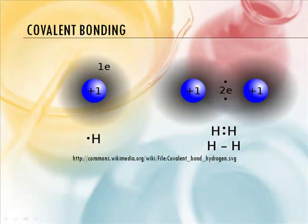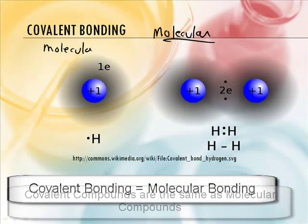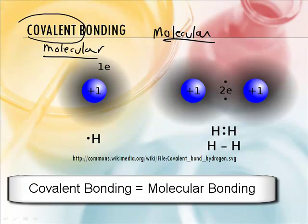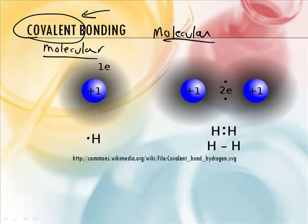Now we've got a different kind of bonding: covalent bonding. This is sometimes called molecular bonding, and it forms covalent compounds, which are also sometimes called molecular compounds — just two different ways of talking about the same thing. The word covalent is actually good to understand. 'Co' means together, like cohabitation or co-operation. Covalent means sharing — they share valence electrons.